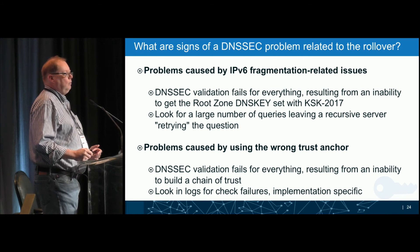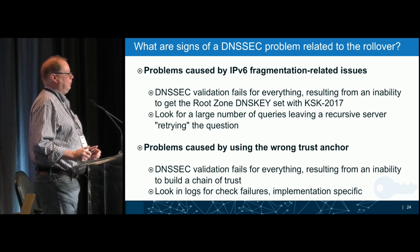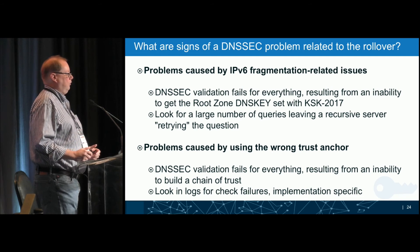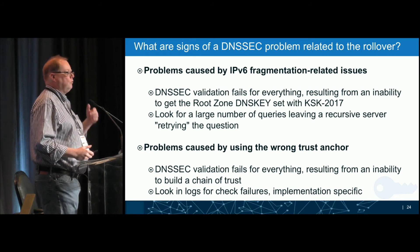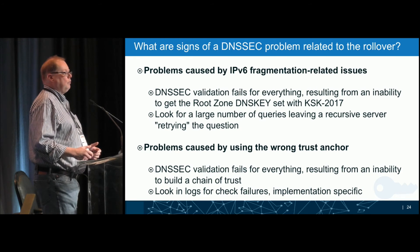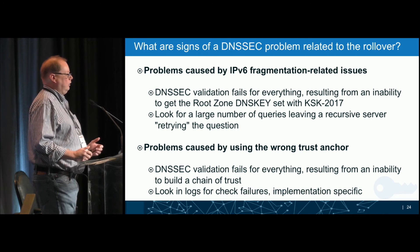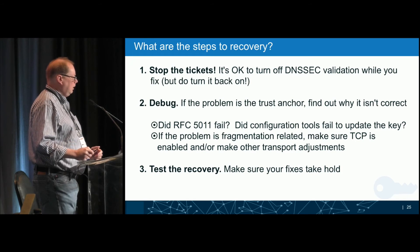What kinds of problems might be out there? We're keeping an eye on two things. One is fragmentation of packets — when we're rolling the keys, responses from the root zone will get large, larger than we've had in the past, and there's concern about fragmentation especially in IPv6. If you see validation failing for everything, maybe you didn't get the new root zone KSK. Do you see lots of retries for those queries? If the problems are because you have the wrong trust anchor, look at why you didn't learn the new trust anchor and check the logs for failures.